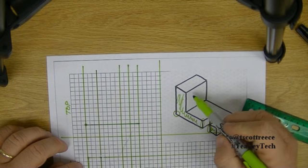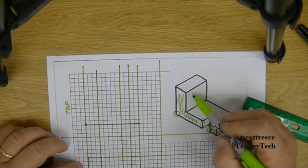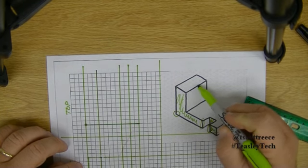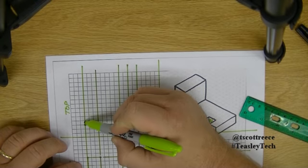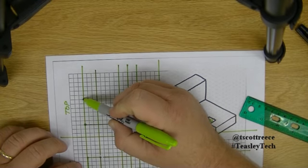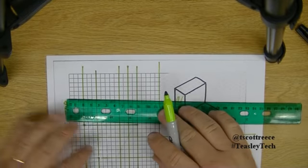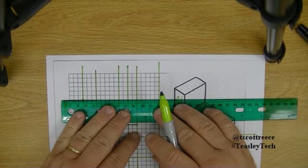So now, we've got to find our width. So we're going to go one, two, three, four, five, six places. One, two, three, four, five, six places. And then again, we're going to come all the way across.